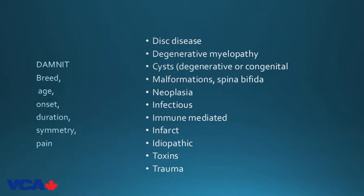Differentials follow the DAMNIT mnemonic — using history, findings, breed, age, onset, duration, symmetry, and pain to arrive at a diagnosis. The list includes: disc/degenerative disease, degenerative myelopathy, cysts, malformations such as spina bifida, neoplasia, infectious, immune-mediated, infarct, idiopathic, toxins, and trauma. Metabolic causes are essentially absent for spinal cord disease and can be removed from the list.